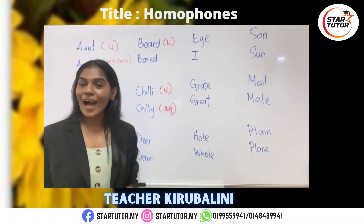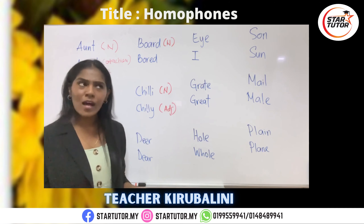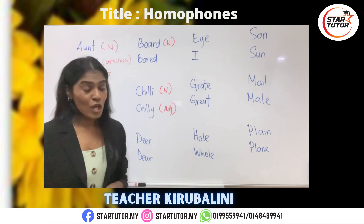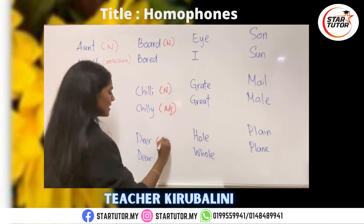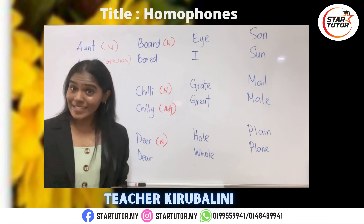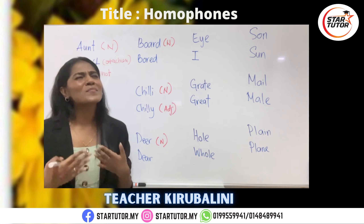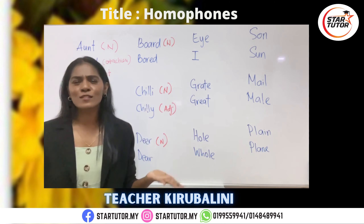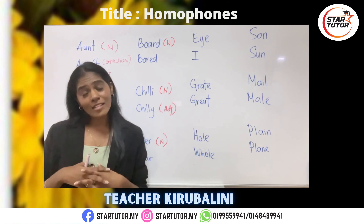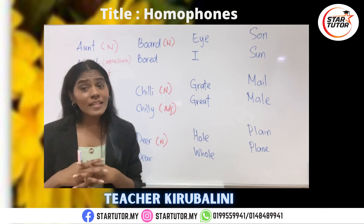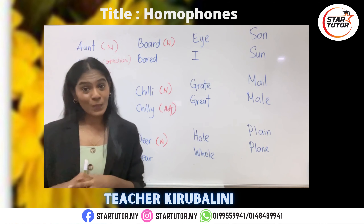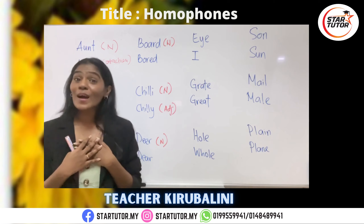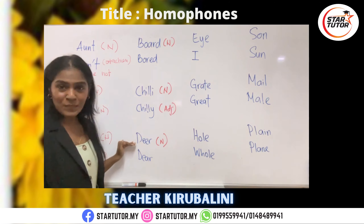The next set of words we have is 'deer' and 'dear'. Alright, the first, 'deer', is of course the animal deer — so this is a noun. The second, 'dear', is actually one of my favourite words because I call my students all kinds of sweet names. I call them darlings, I call them loves, I call them dear. So, 'dear' is a word that you use to address someone who is very close to your heart. So, you have 'deer' and 'dear'.